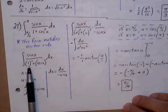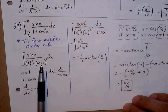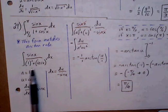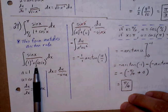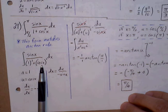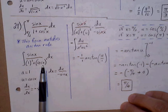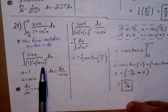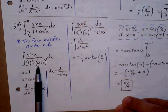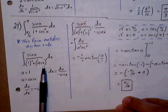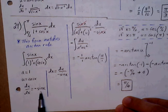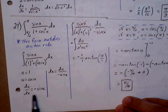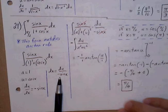We identify our u and a values. Our a value is 1 — it's the constant. Our u value is what's inside the parentheses; u always has a variable. So u = cos(x). The derivative of cosine is negative sine(x). Solve for dx: dx = du / (−sin x).